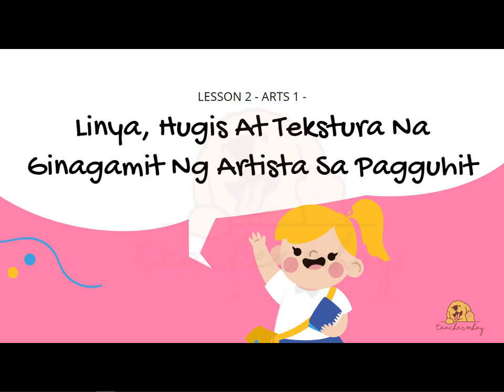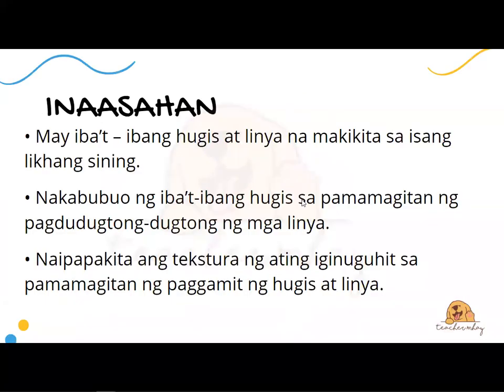Hello, magandang araw mga bata! Welcome to Lesson 2 for Arts 1. Pag-aaralan natin ngayon ang tungkol sa linya at tekstura na ginagamit ng artista sa pagguhit. Makinig kayong mabuti ha! May iba't ibang hugis at linya na makikita sa isang likhang sining. Ang ibig sabihin ng likhang sining ay artwork sa English. Nakabubuo ng iba't ibang hugis sa pamamagitan ng pagdugtong-dugtong ng mga linya — yan ang matututunan nyong gawin pagkatapos nyong mapanood ang class natin for today.